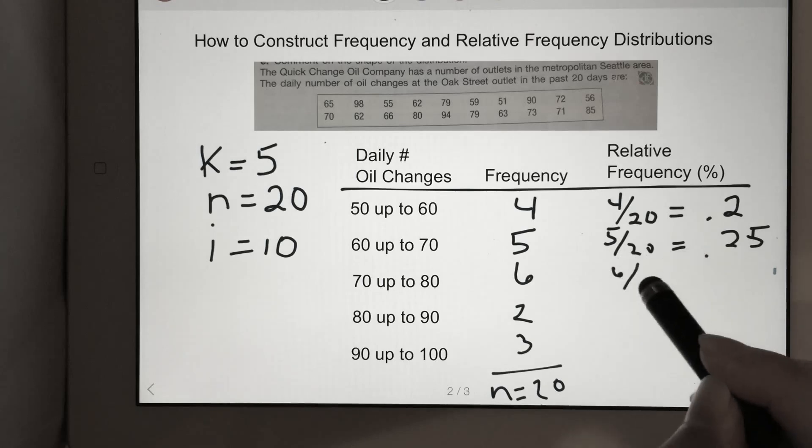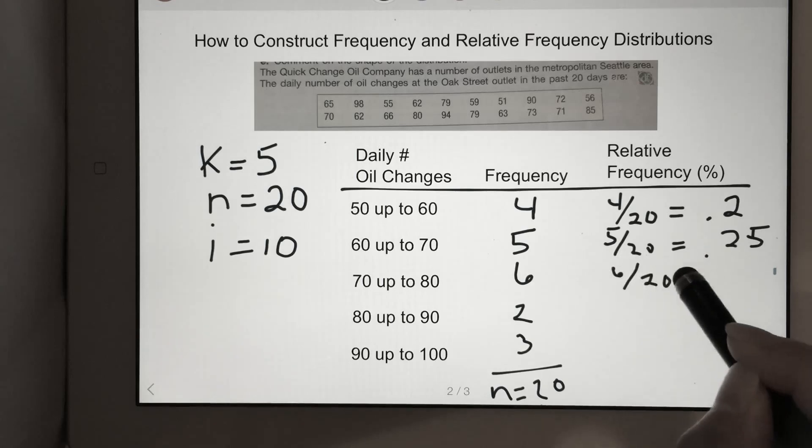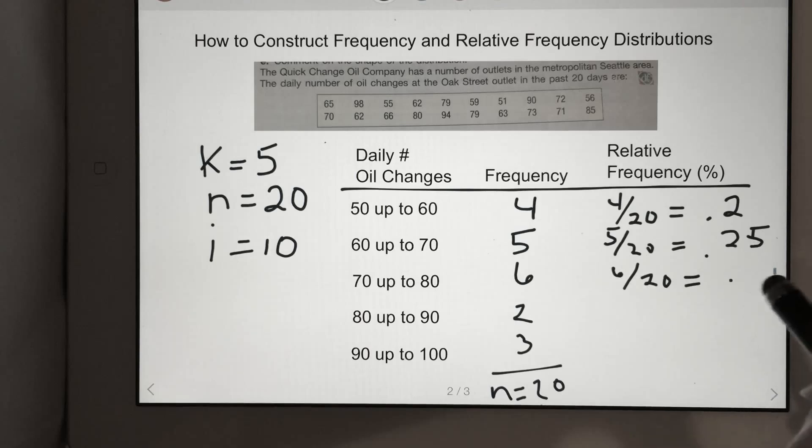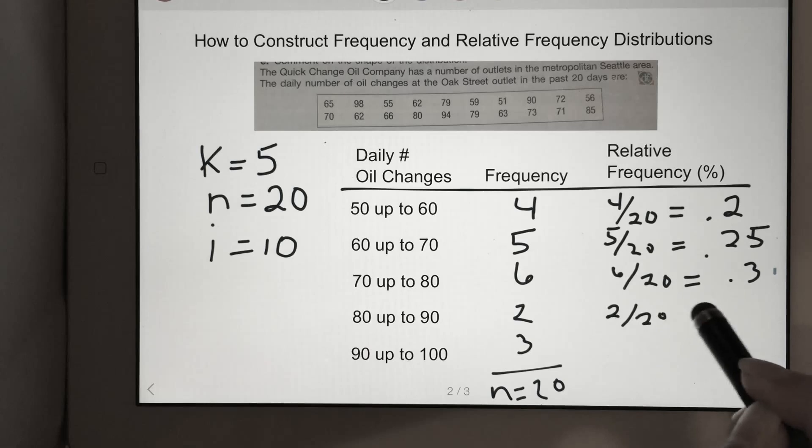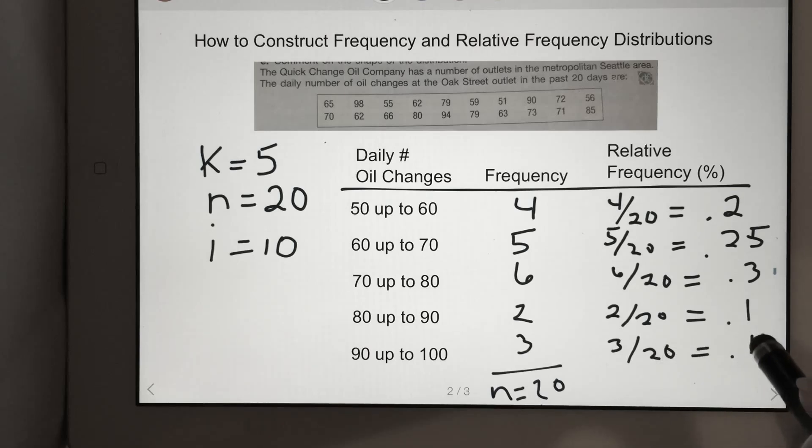6 divided by 20, 0.3. 2 divided by 20, 0.1. 3 divided by 20, 0.15. There you have it.